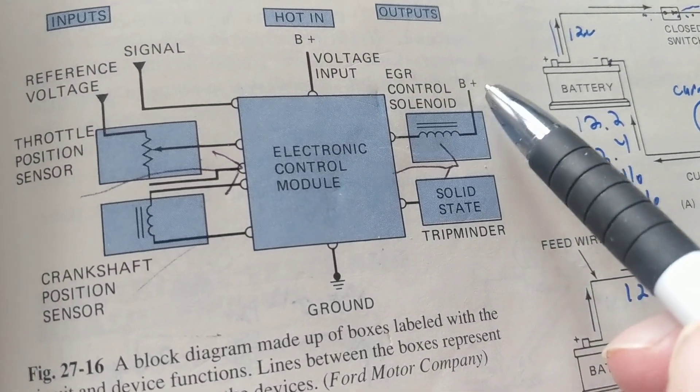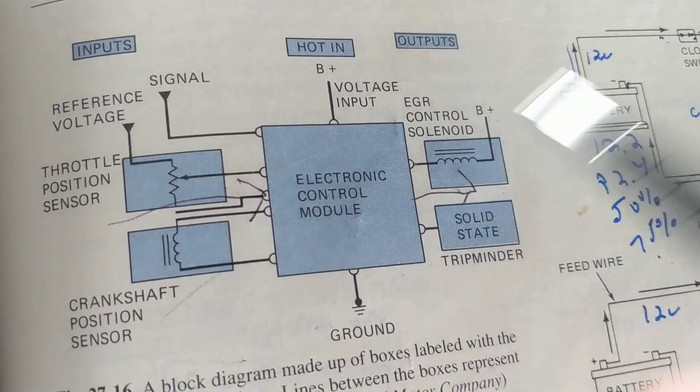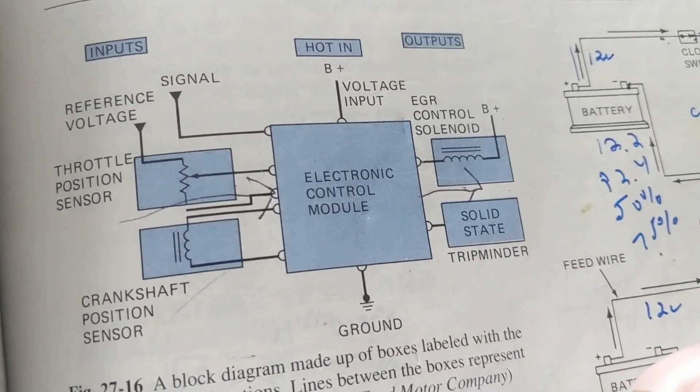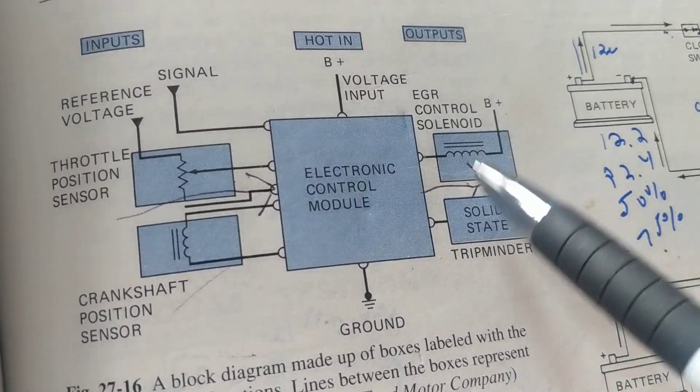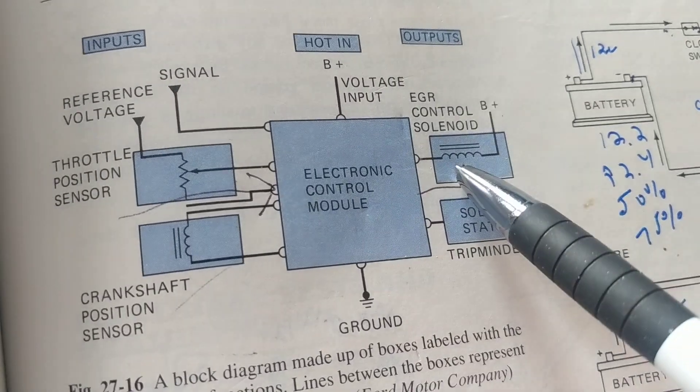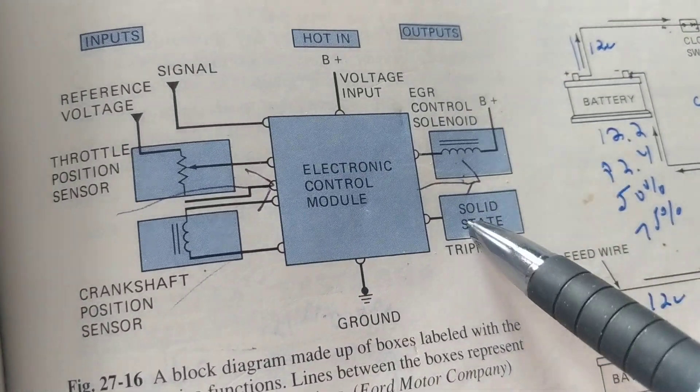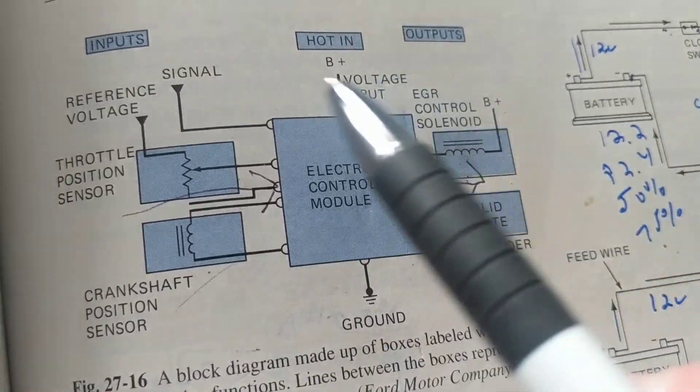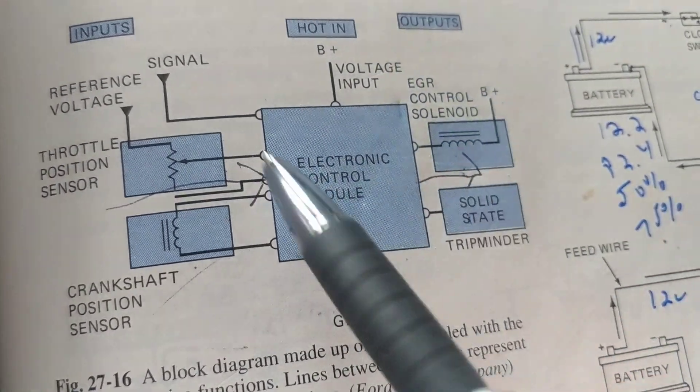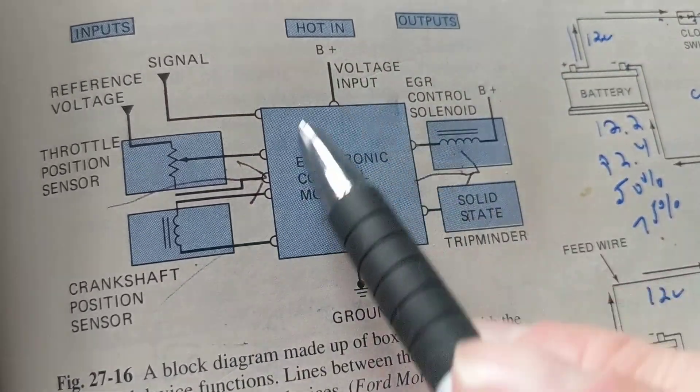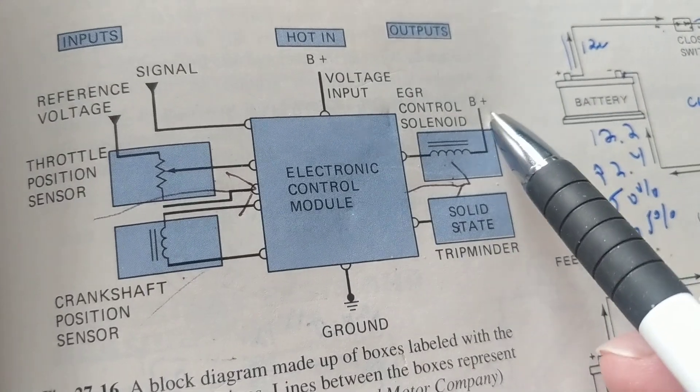When you see a B plus over here, like we had in the previous textbook, these are outputs. First thing that should come to your mind. I have an output. If I have an output, what does that mean? That means I have an input. If I have no output, does that necessarily mean I have no input? Not necessarily. I could have inputs, but the problem might be in here.